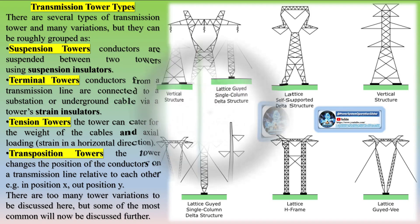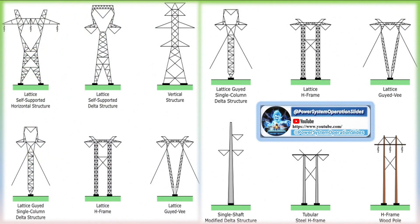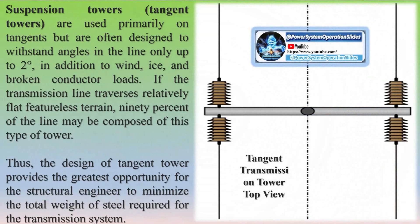Long transmission line: A long transmission line is classified as a transmission line with a length more than 250 kilometers or 150 miles. The voltage level is above 133 kV, and line constants are considered as distributed over the length of the line.